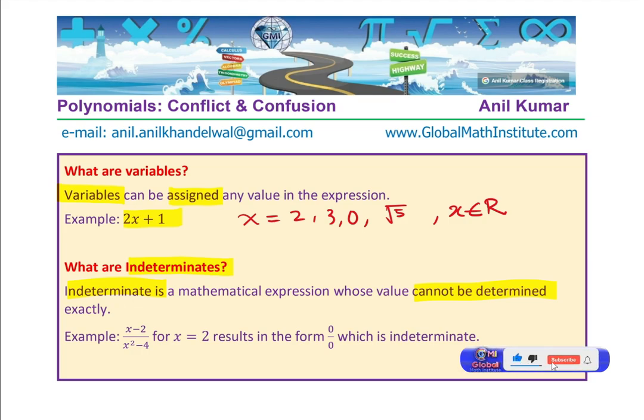Let us make things very clear here that indeterminate is a mathematical expression. Variable and expression - variable is a part of expression and that too can be assigned. Indeterminate is an expression which does not have the exact value known. And that is why it is called indeterminate.